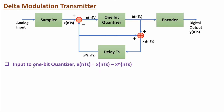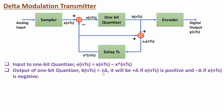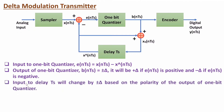The input to the one-bit quantizer is E(nTs), which is the difference between the sampled signal and the delayed signal x-cap(nTs). The output of the one-bit quantizer will be plus or minus delta — plus delta if the error is positive and minus delta if the error is negative. The input to delay Ts will be changed by plus or minus delta as per the output of the one-bit quantizer. At last, we will have digital output at one bit per sample.